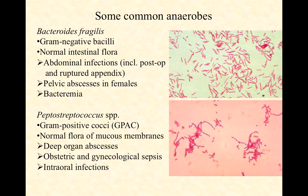Bacteroides fragilis can cause abdominal infections if it leaves the intestinal tract and gets into the abdomen from an operation, a ruptured appendix, or parenteral trauma like a stab wound, an impalement, or a bullet wound — any of those can introduce it into the abdominal cavity where there's very little oxygen. In females, it can cause pelvic abscesses, and in virtually anyone it can cause bacteremia, meaning an infection of the bloodstream with bacteria.